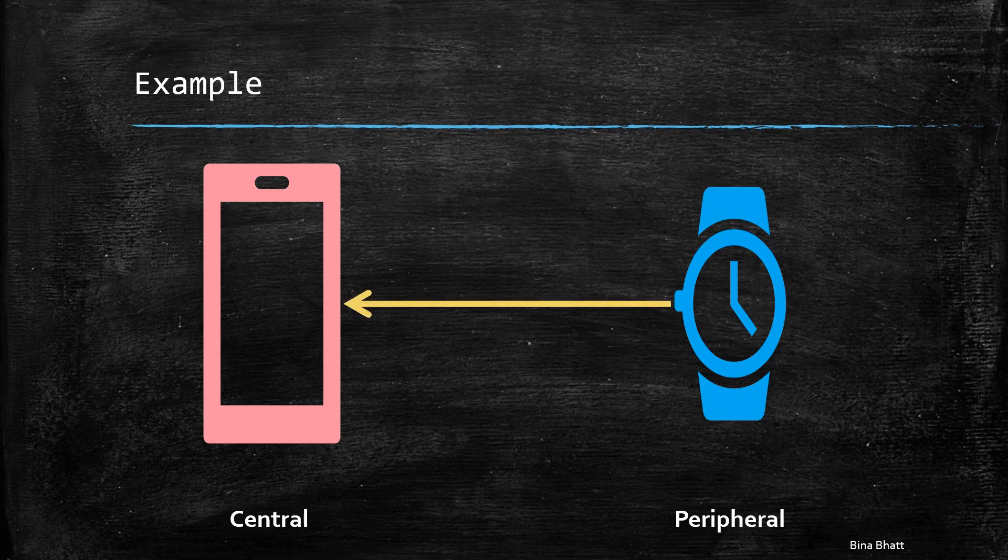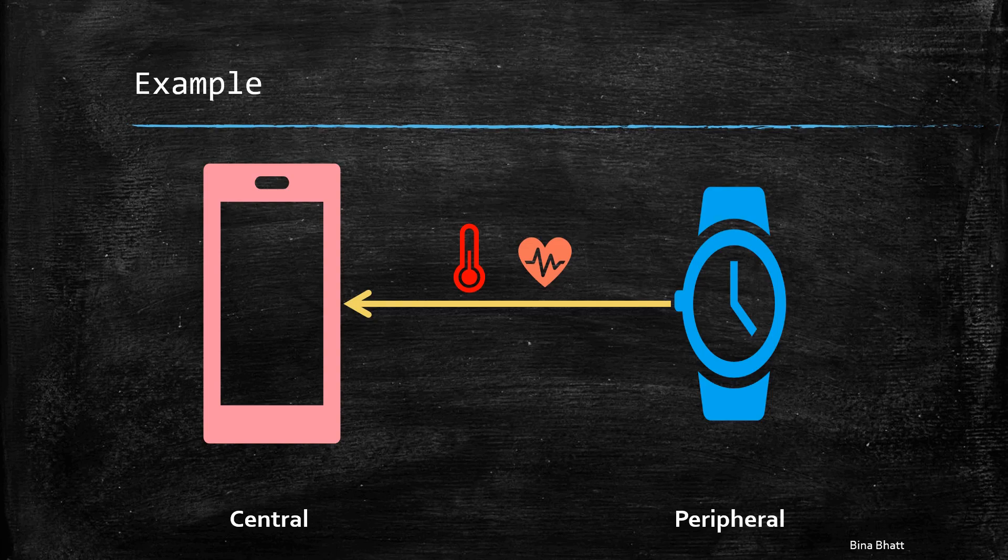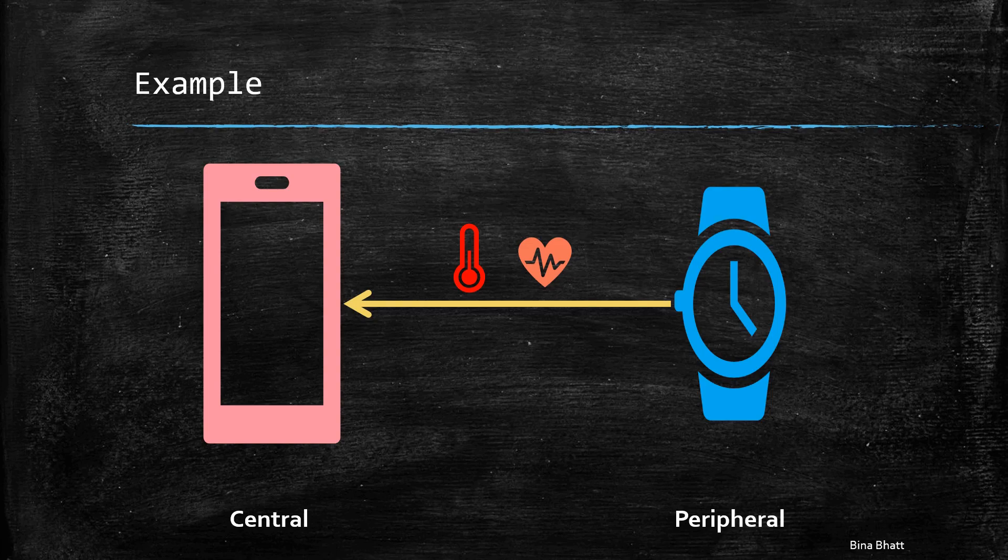After connection establishment, the phone can request data from the watch. It can request heart rate or temperature data, which is collected by the sensors of the smartwatch. Thus, in this case, the phone is acting like a GATT client and the watch is a GATT server.